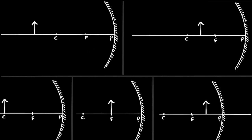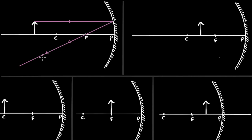The first ray you can draw parallel to the principal axis. This ray after reflection will go through the focus. Because all rays which are parallel to the principal axis after reflection go through the focus — that's the meaning of the word focus. They get focused at this point. So that's ray number one.